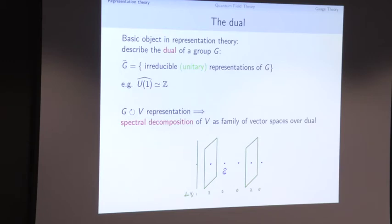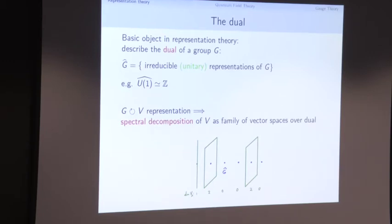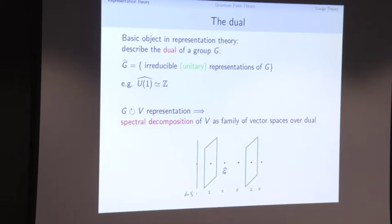We're going to use Fourier series as a guiding principle for what we do in representation theory. Given a group G, we consider some kind of dual of G — the unitary dual, which is the set of irreducible unitary representations of G. In the case of the circle group, those are all the exponentials, all the possible joint eigenspaces of rotation. To any group G we assign a set G-hat, and we try to understand the relation between G and G-hat.